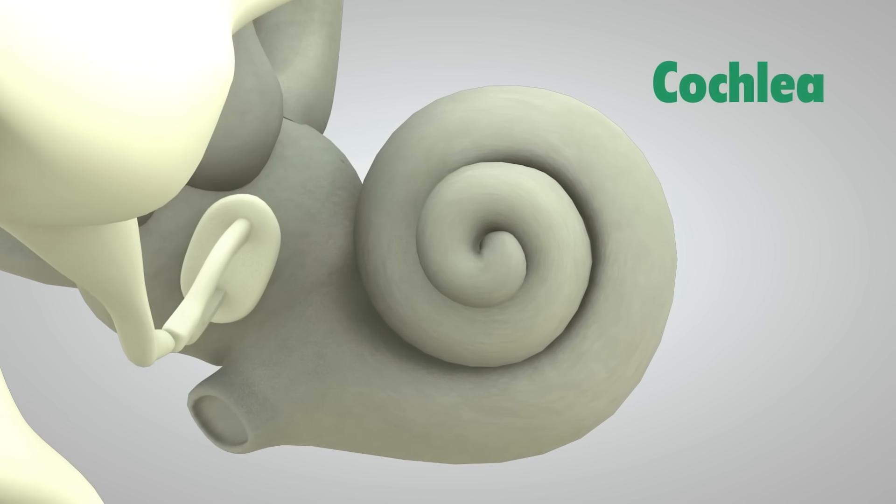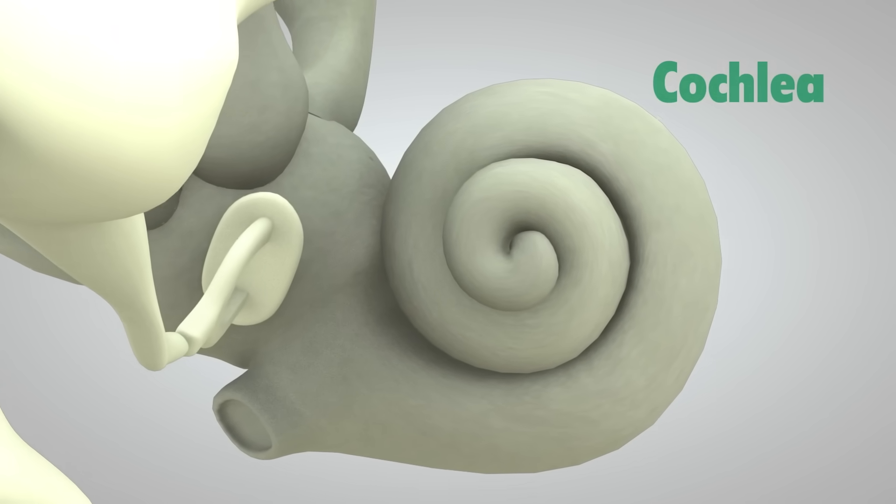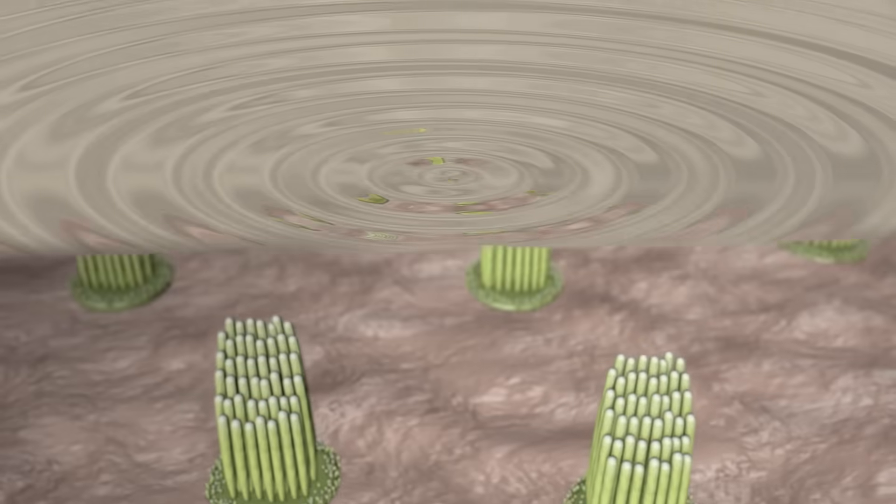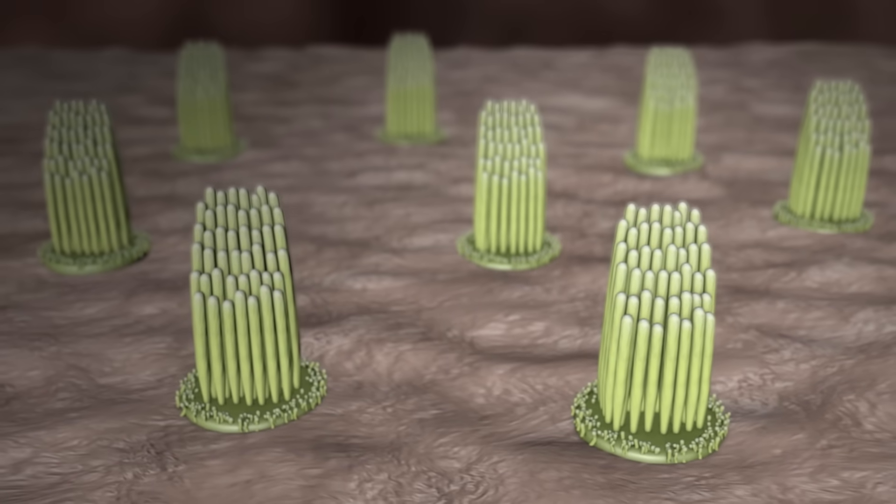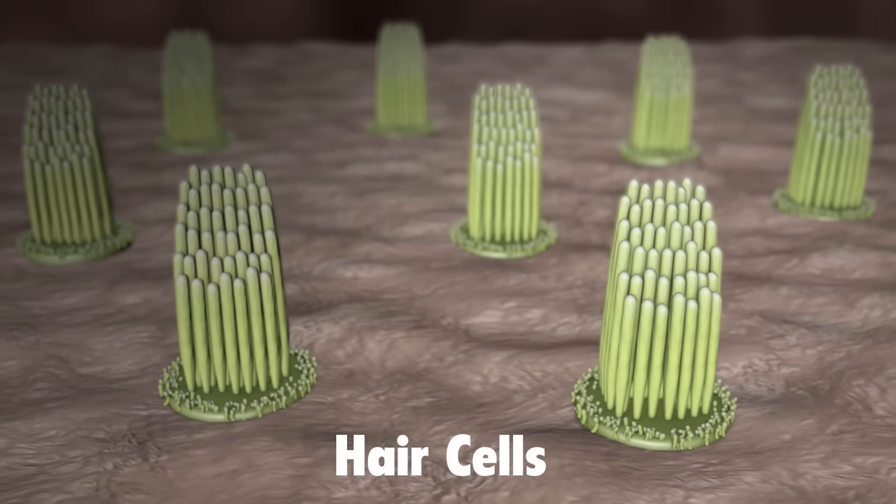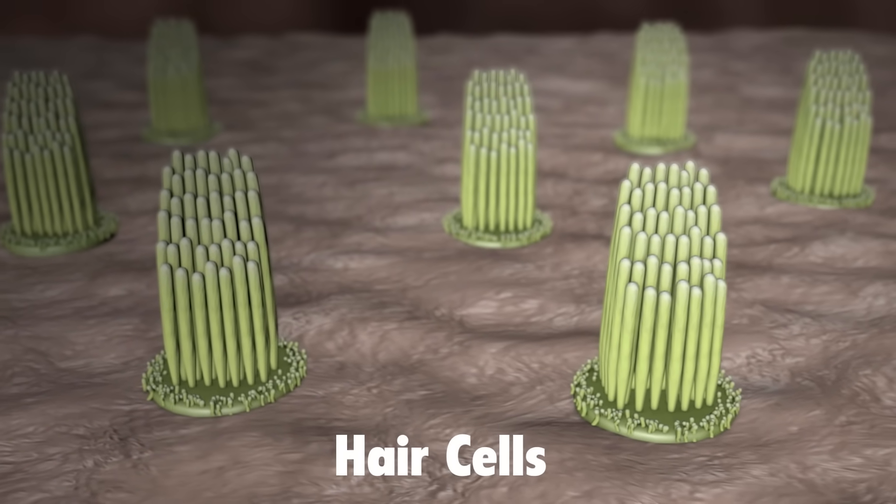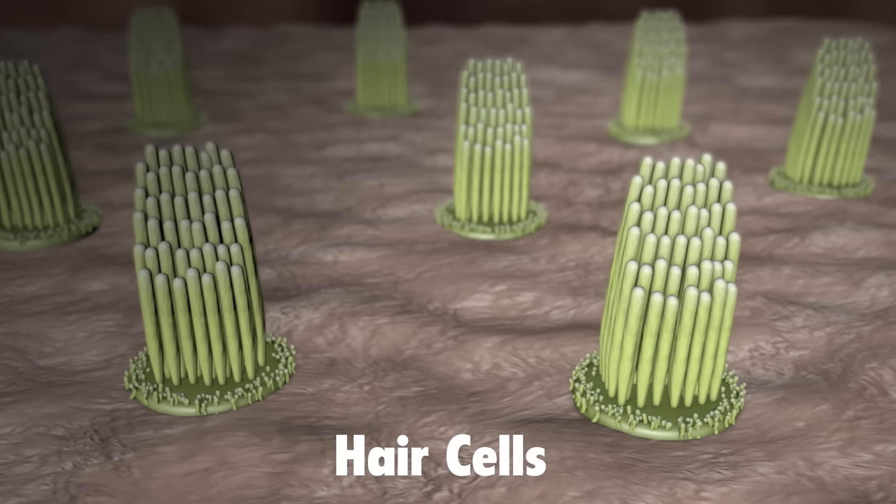The cochlea is shaped like a snail and is the size of a garden pea. It is filled with fluid, and the sound vibrations make this fluid ripple, which creates waves. Hair-like structures called stereocilia sit on top of hair cells and are grouped together as hair cell bundles inside the cochlea.